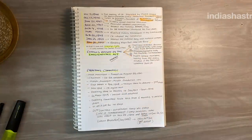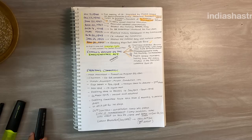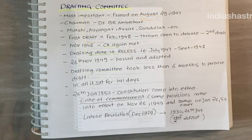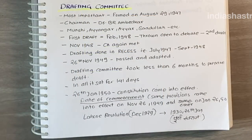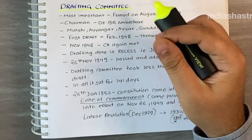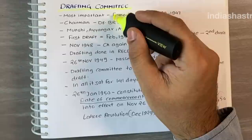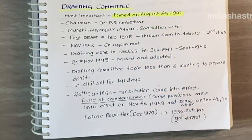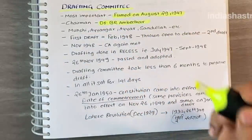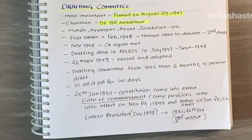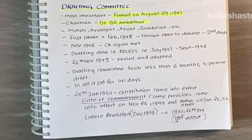The drafting committee was one of the most important committees of the constituent assembly. It was formed on August 29, 1947. The chairman of the drafting committee was Dr. B.R. Ambedkar. The committee had notable jurists as its members, like Munshi, Ayengar, Iyer, Sadatullah, and others.